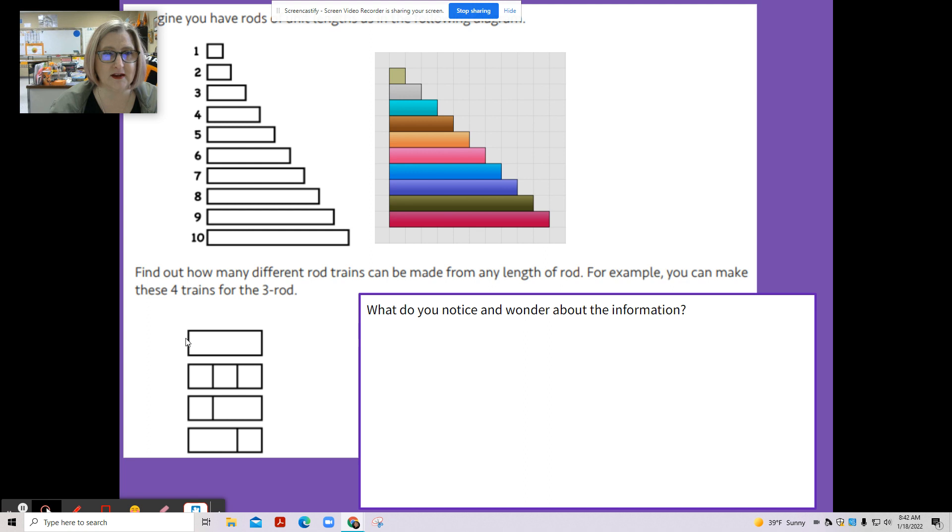So this is a three rod, this rod or this rod. And it's showing you that with this three rod, you can use three of these white or whatever color that is, or you can use one of these colors and one of these, or you can use one of these and one of these.